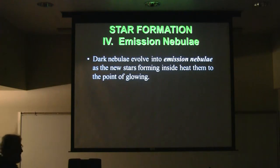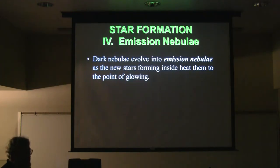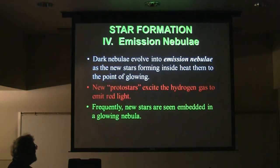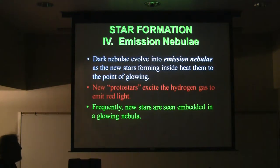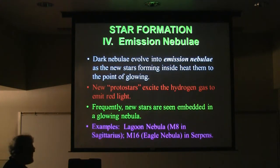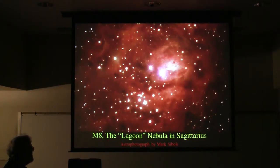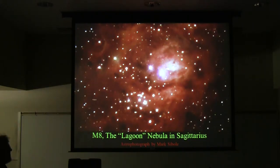The next step is emission nebulae. We've gone from dark nebulae to emission nebulae as the stars forming inside these nebulae heat the clouds of gas up to the point of glowing. The first color light that comes out is red light. Sometimes you see the new stars embedded in the glowing nebula. Here's the Lagoon Nebula again — here are some stars embedded inside it, getting hot enough now to cause the nebula to glow with this reddish light.